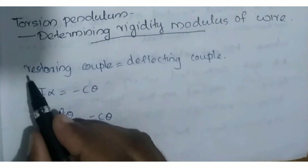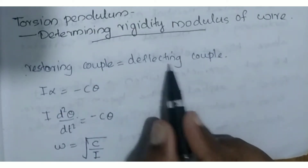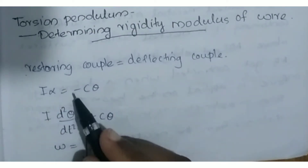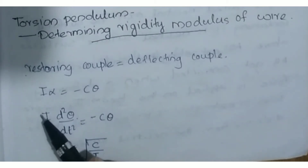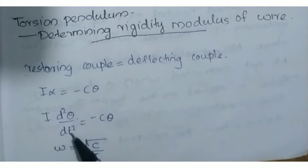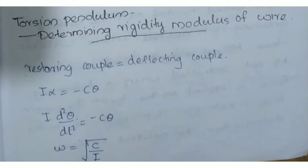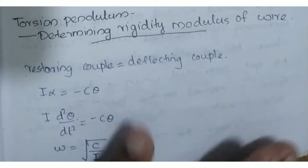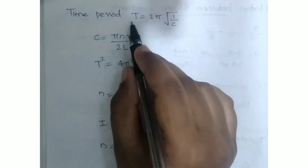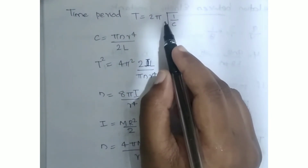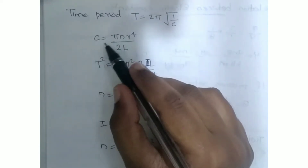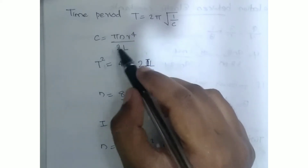Let's learn how to do the derivation. The restoring couple is equal to the deflecting couple. That is why I times alpha equals minus C times theta. Therefore, I times d²θ/dt² equals minus C theta. The angular frequency omega is the square root of C by I.